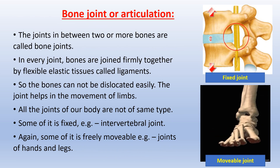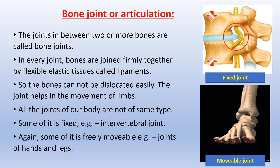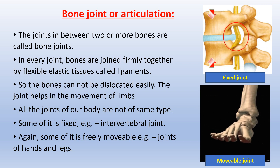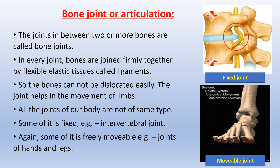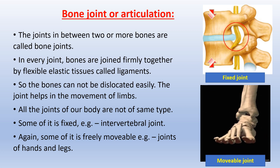Bone Joint or Articulation: The joints between two or more bones are called bone joints. In every joint, bones are joined firmly together by flexible elastic tissues called ligaments, so the bones cannot be dislocated easily. The joint helps in the movement of limbs. All the joints of our body are not of the same type. Some are fixed, such as the intervertebral joint, and some are freely movable, such as joints of hands and legs. You can see the diagram of both fixed and freely movable bone joints.